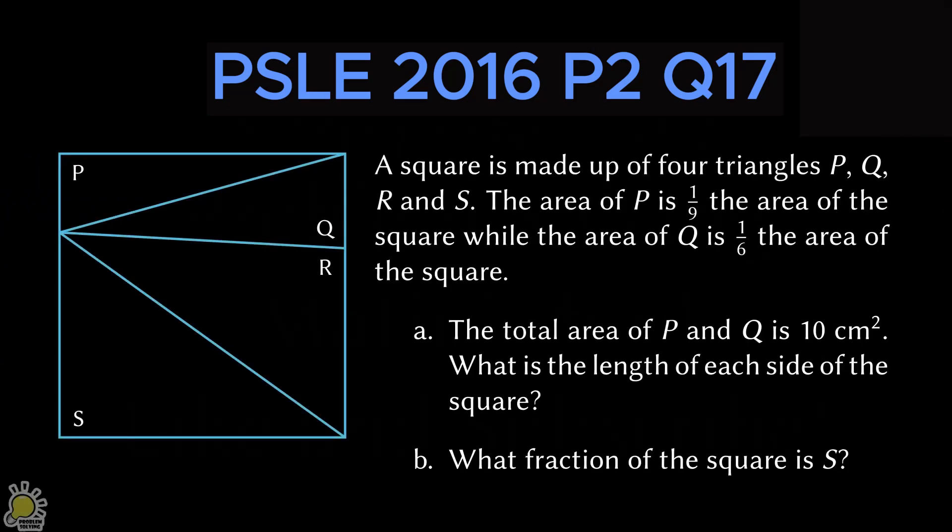A square is made up of four triangles, P, Q, R and S. The area of P is one-ninth the area of the square, while the area of Q is one-sixth the area of the square.